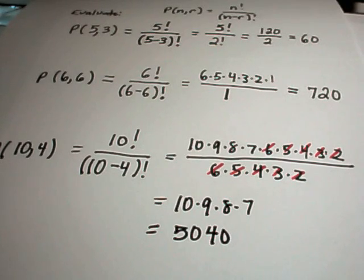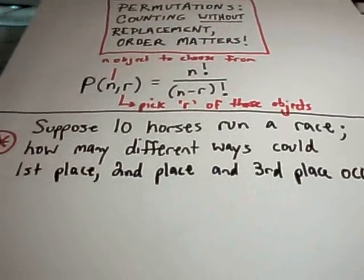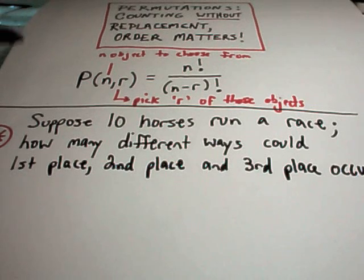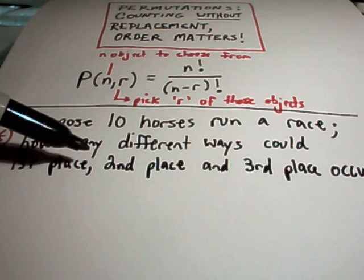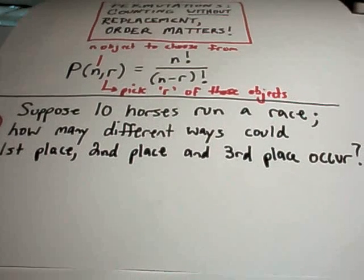Okay, so let's do a couple of word problems to make some sense out of this, hopefully a little bit more. So suppose you're at the racetrack and there's 10 horses running a race, and you want to know how many different ways first place could happen, second place could happen, and then third place could happen.